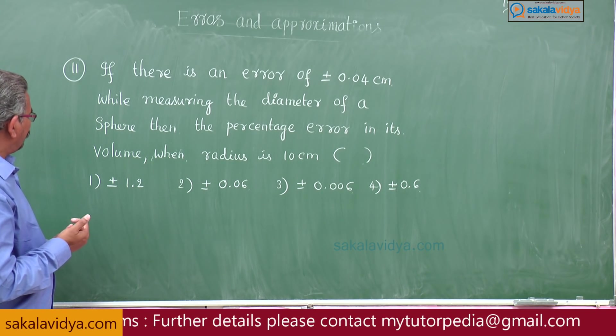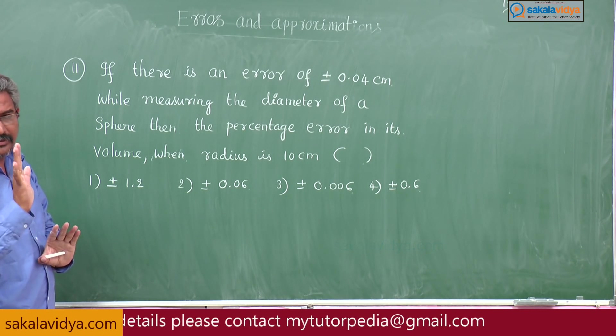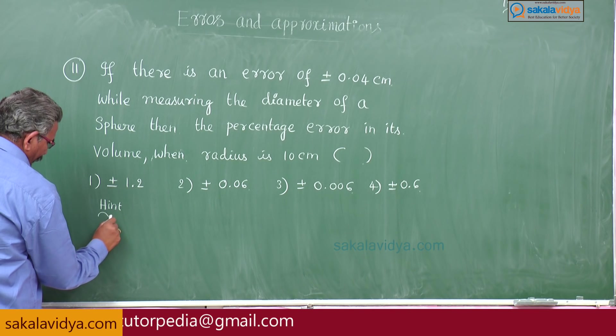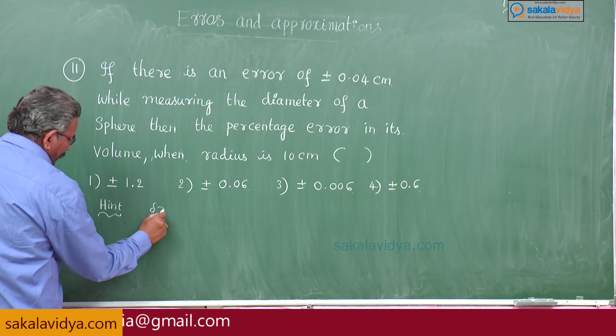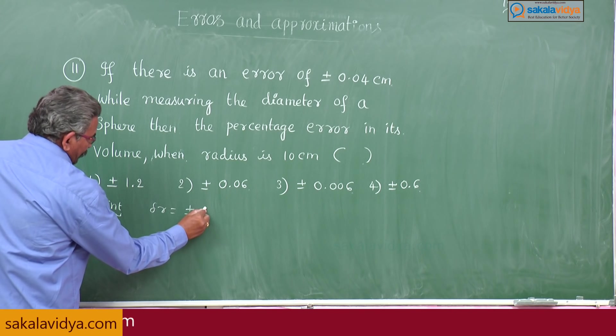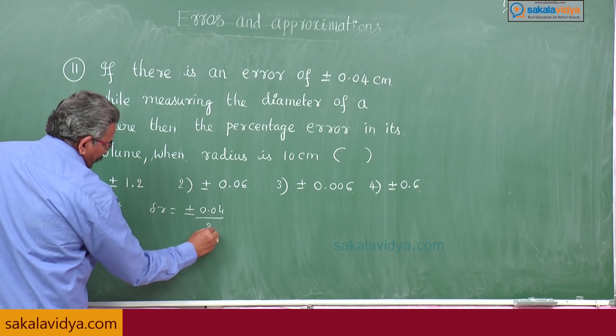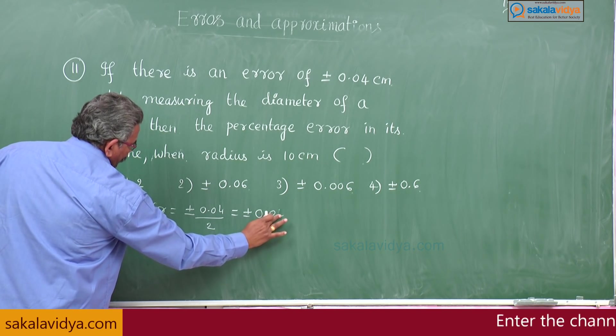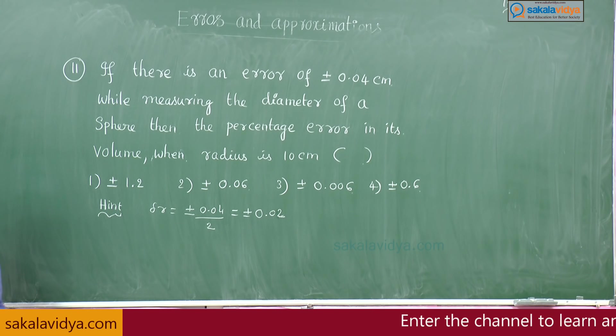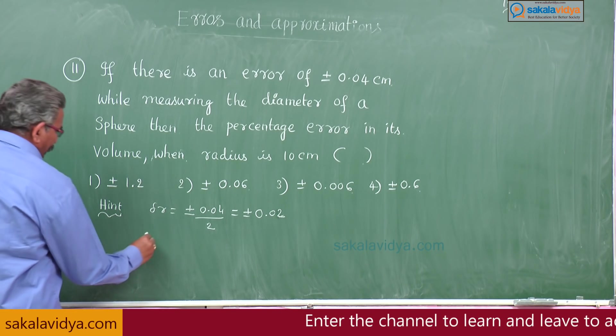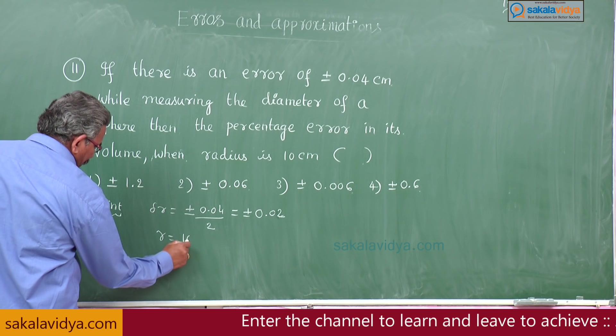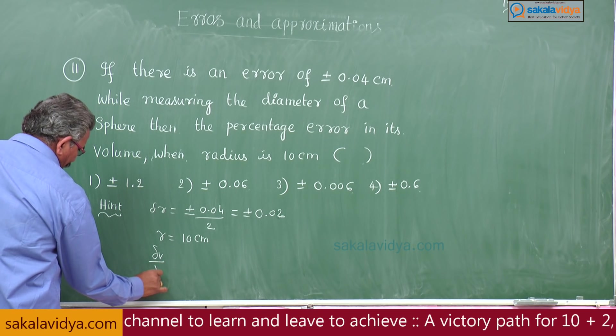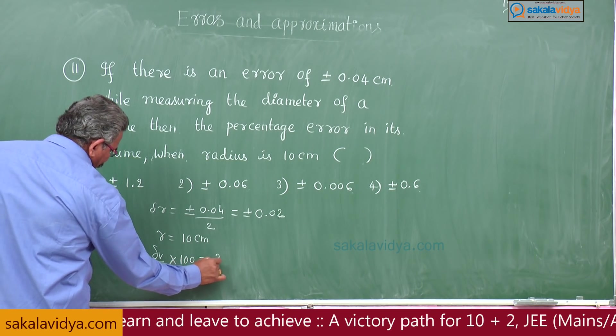Now what we have to find out is delta V by V into 100. Hint: write on delta r is equal to plus or minus 0.04 by 2, this is plus or minus 0.02. Now, r is equal to 10 centimeters, what we have to calculate: delta V by V into 100 is equal to question mark.